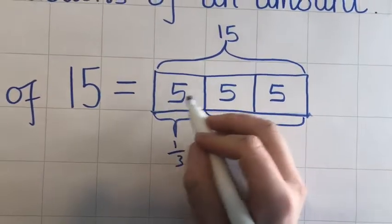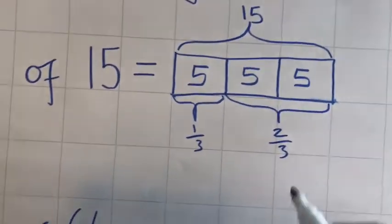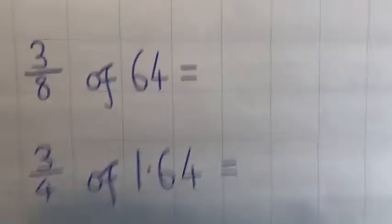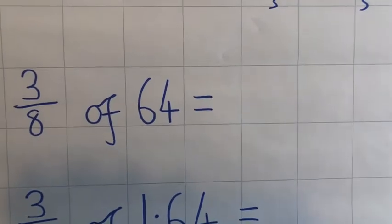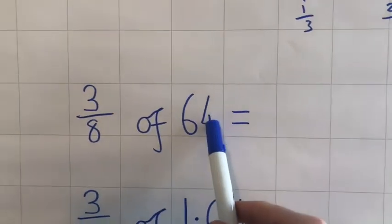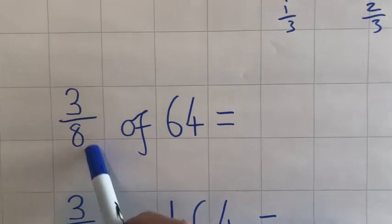So let's have a look at this one: three eighths of 64. Now, just because the number is bigger does not make it any more difficult.